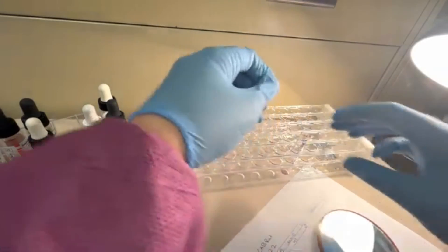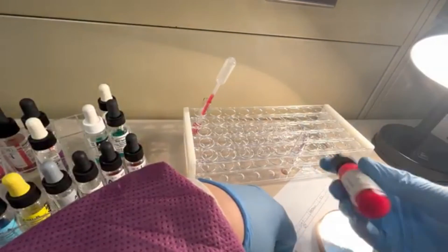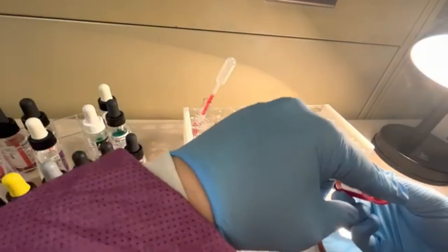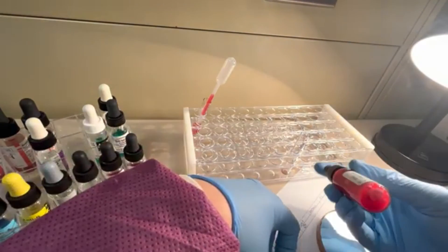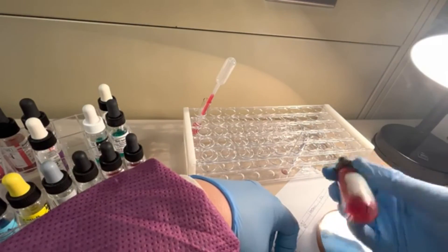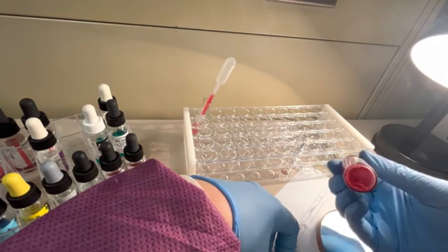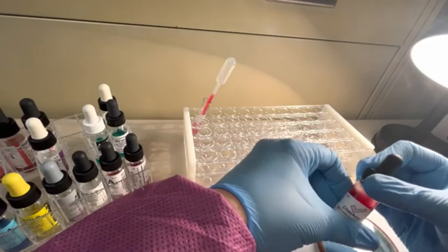We can't say that definitively yet until we do what? We have to add check cells to it. This is reagent. Always when you're using red cell reagent, make sure that you get all that red cell off the bottom of the vial. Check cells are IgG-coated red blood cells that are going to cause a positive reaction in any AHG. I'm going to put one drop in our negative DAT.